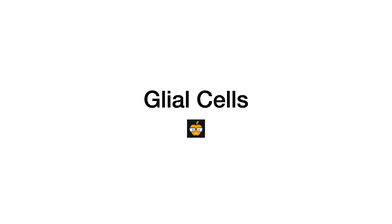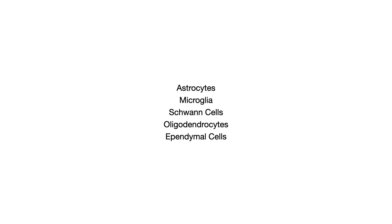In this video, I'm going to do a rapid review of the various types of glial cells. A lot of questions keep popping up about glial cells, and while this is a really small topic, the question comes up so often that I wanted to make a quick video so that my subscribers would never get this question wrong again. We'll differentiate between five types of cells: astrocytes, microglia, Schwann cells, oligodendrocytes, and ependymal cells.